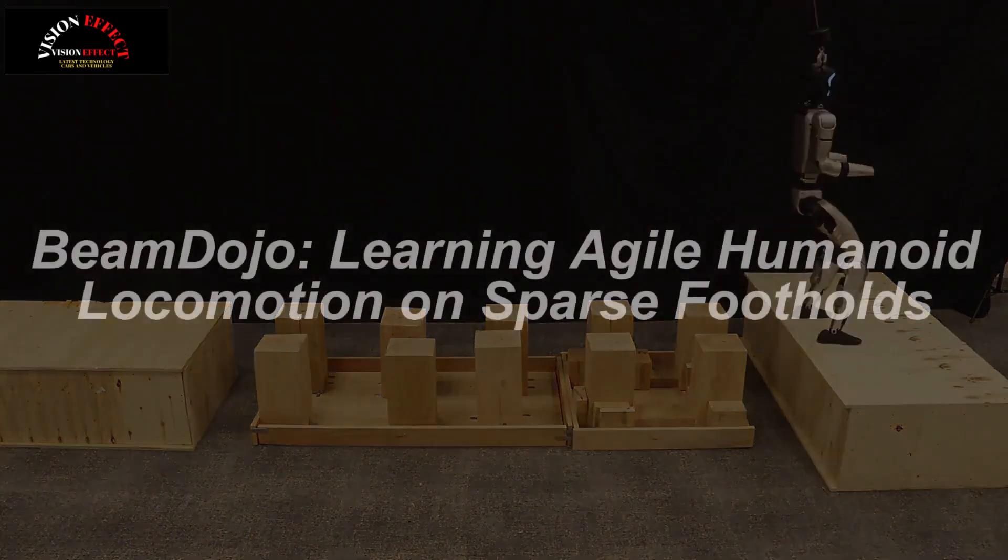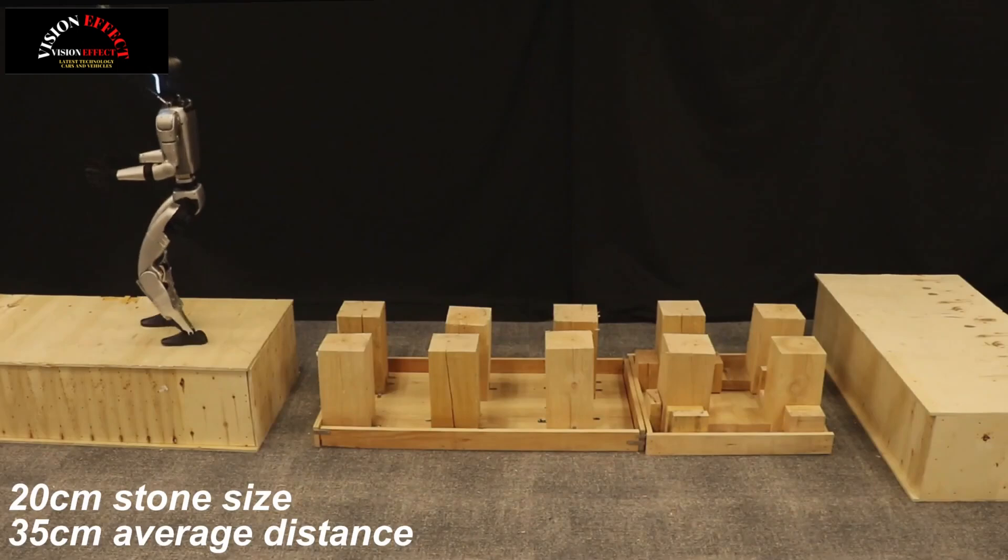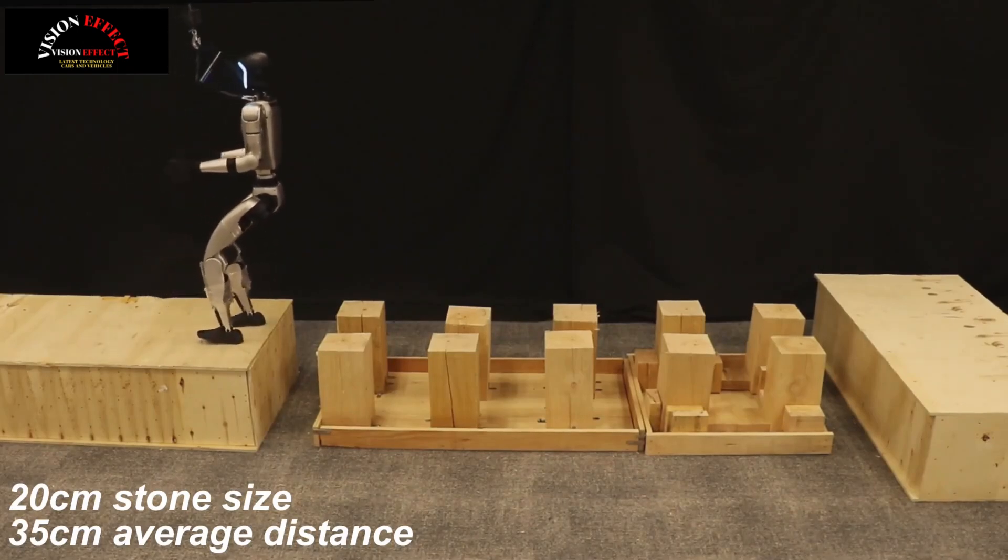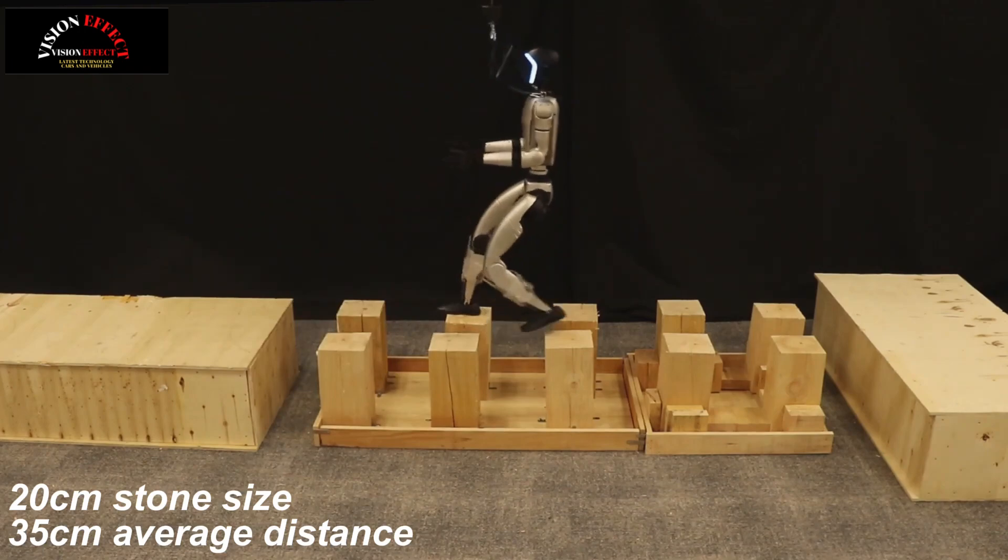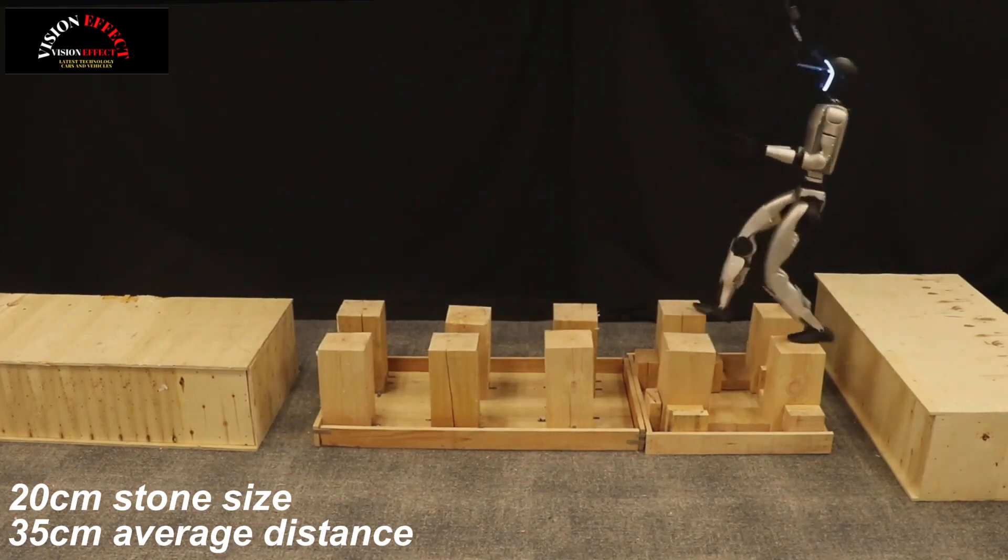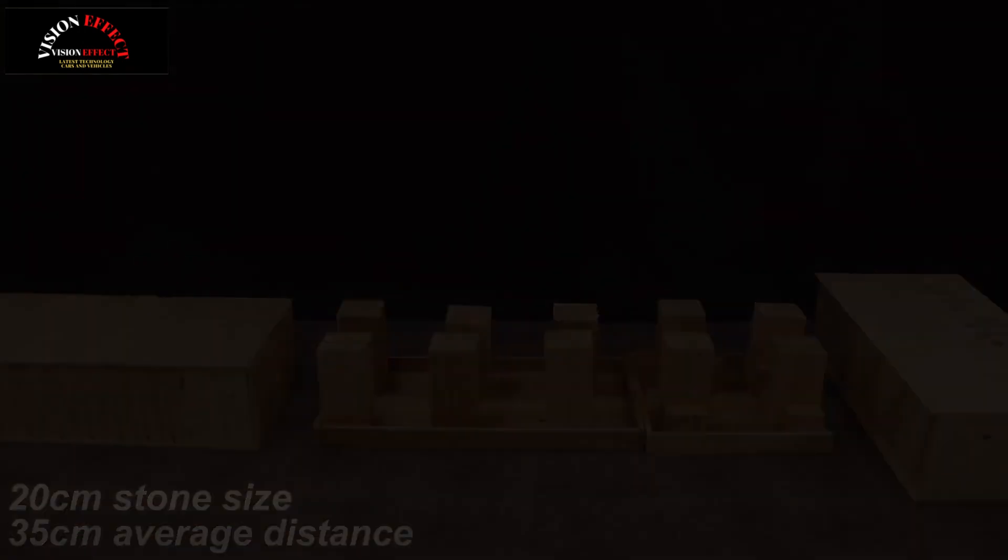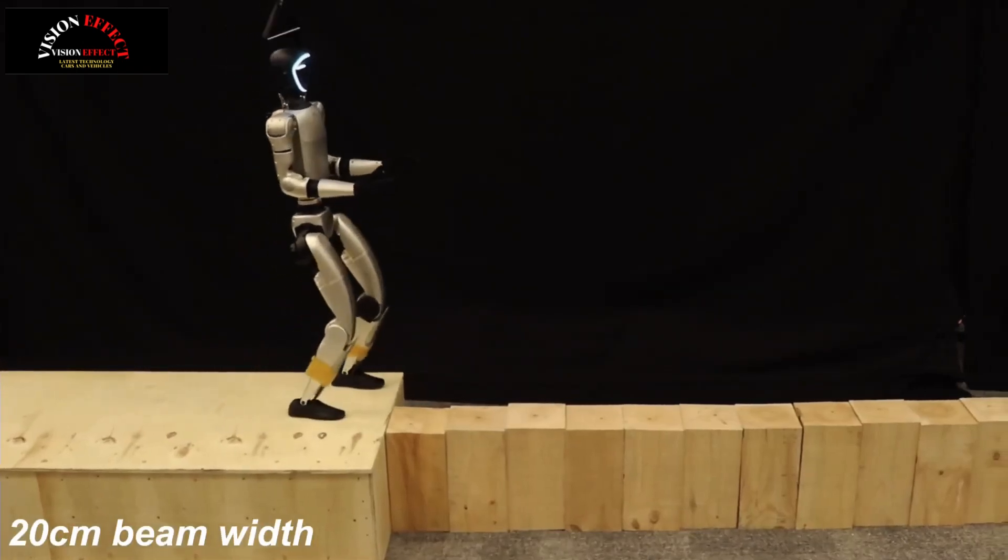Existing approaches designed for quadrupedal robots are generally not generalizable to humanoid robots due to differences in foot geometry and unstable morphology, while learning-based approaches for humanoid locomotion still face great challenges in complex terrains due to sparse foothold reward signals and inefficient learning processes.